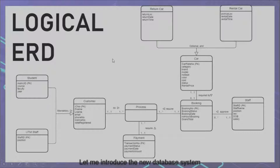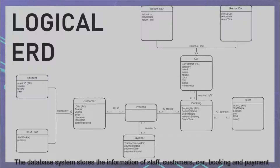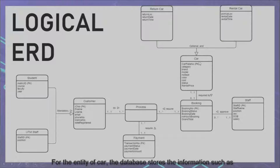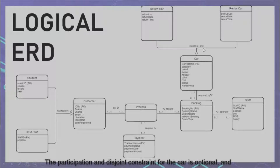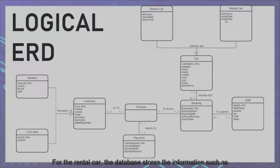The database system stores information on staff, customers, cars, bookings, and payments. For the entity of car, the database stores information such as plate number as the primary key, category, brand, model, number of seats, color, cost, status, and rental price. The participation and disjoint constraints for the car entity are optional.